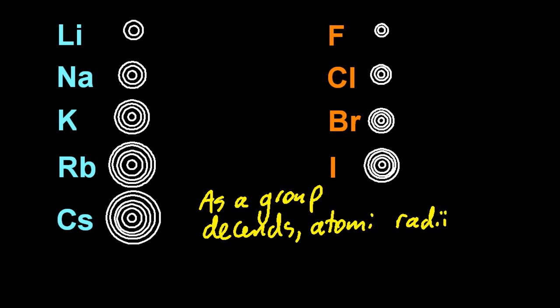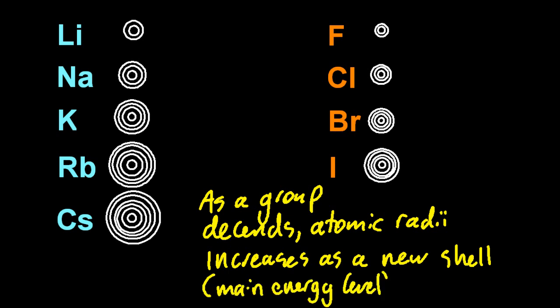So in IB speak, as a group descends atomic radii increases as a new shell or main energy level is added.